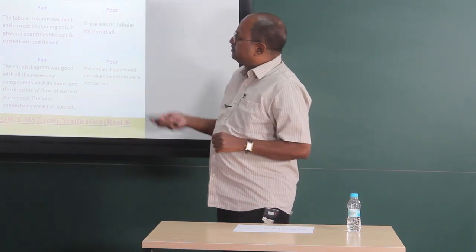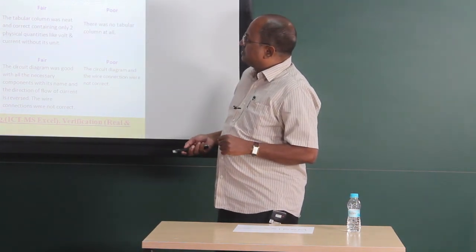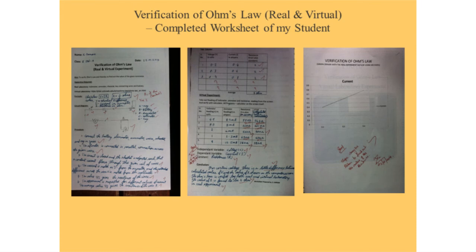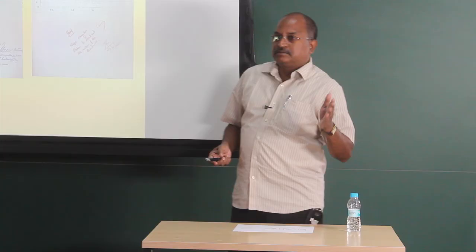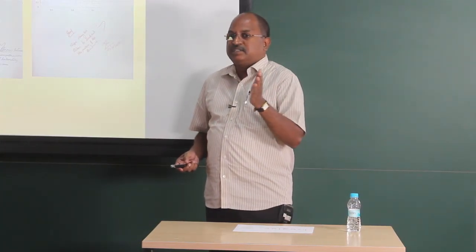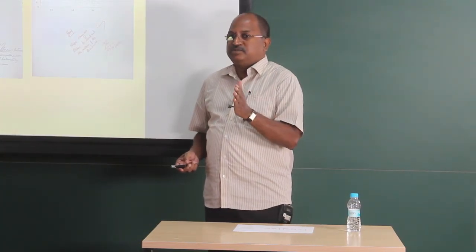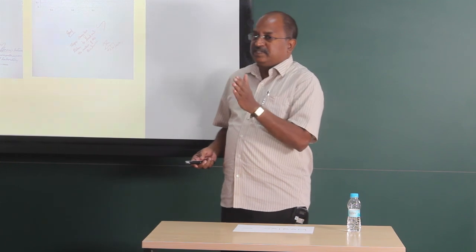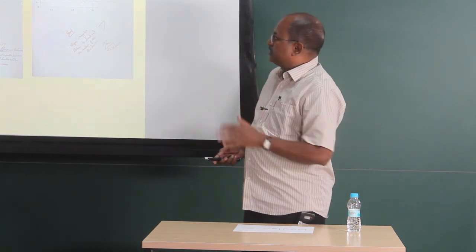For this experiment, I framed rubrics. This is the worksheet filled in by the student. This is the data obtained from the real experiment, and this is the data obtained from the virtual experiment. He has drawn a graph and understood that voltage is directly proportional to the current when resistance is kept constant.